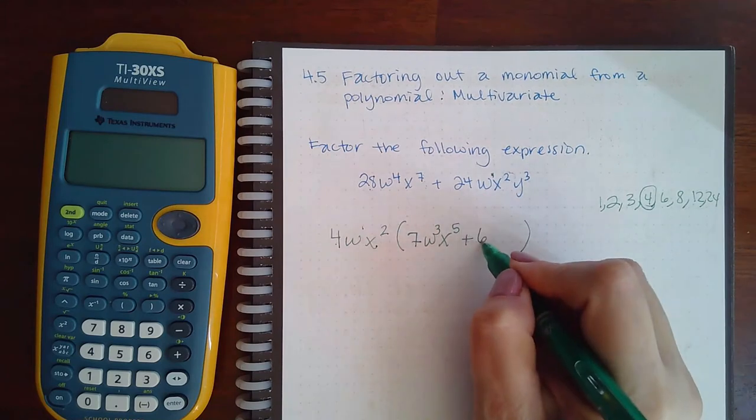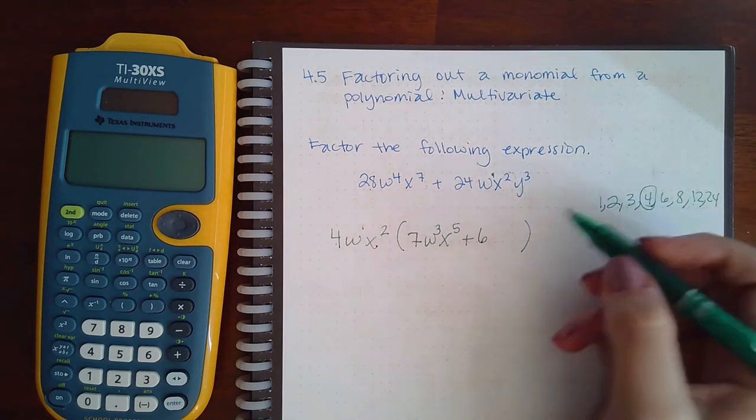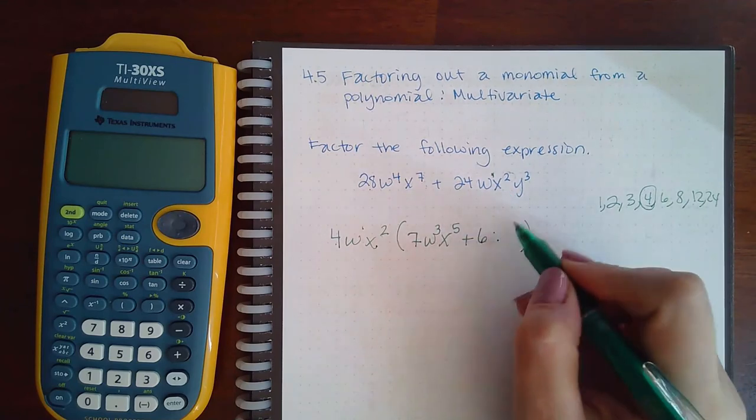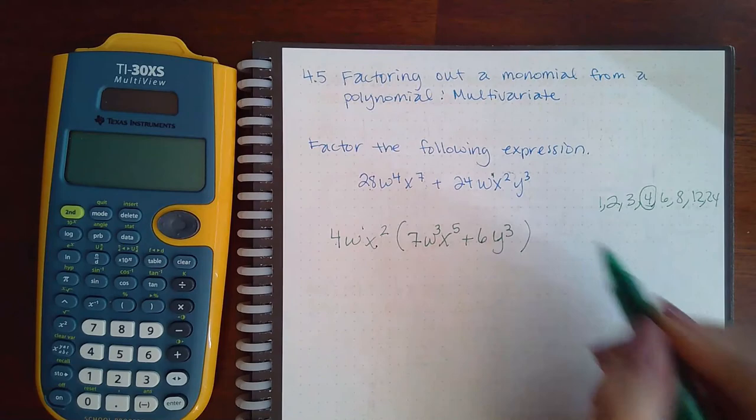24 divided by 4 is 6. I took that W out, so I have no more W's here. I took the X squared out, so I have no more X's here, but I still have that Y cubed.